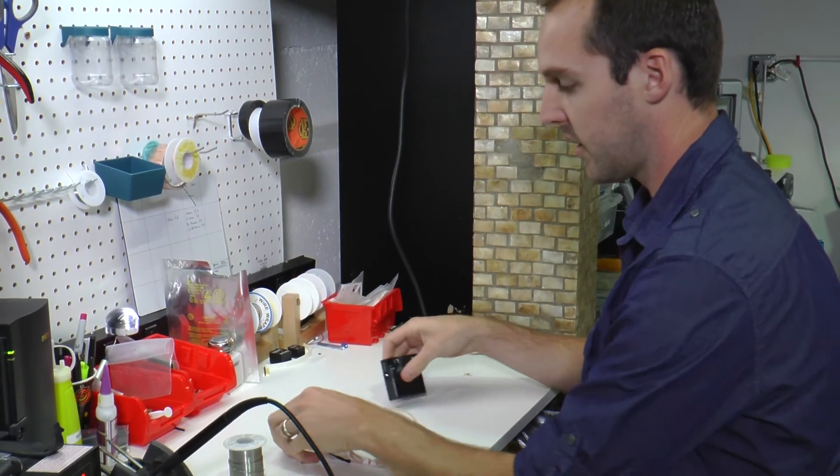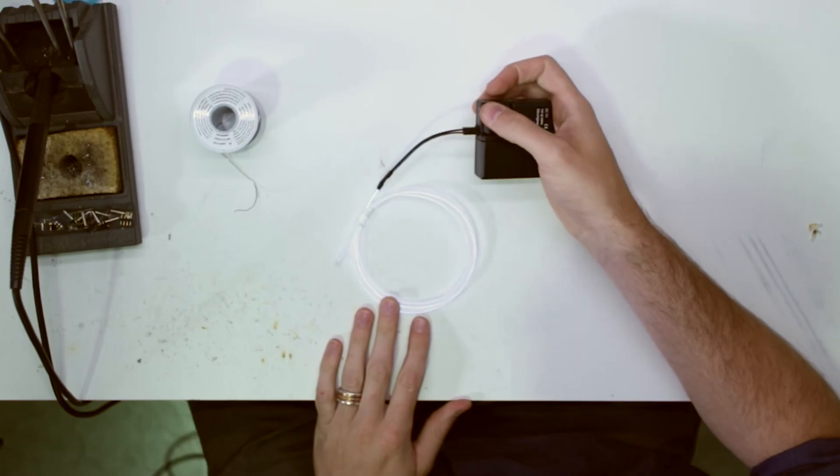At this point you should have a working connection. Go ahead and fire it up and make sure it's working. Thanks for watching and this is how you solder an EL wire connection properly.